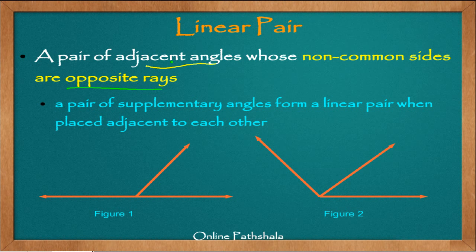When I say opposite rays, it means that the two rays are exactly opposite to each other. Looking at figure 1, we have a pair of adjacent angles with a common side and a vertex. Taking points A, O, and B, with C also labeled, we see that ray OA and ray OB are opposite to each other. When we have two opposite rays, the angle they form is always equal to 180 degrees.